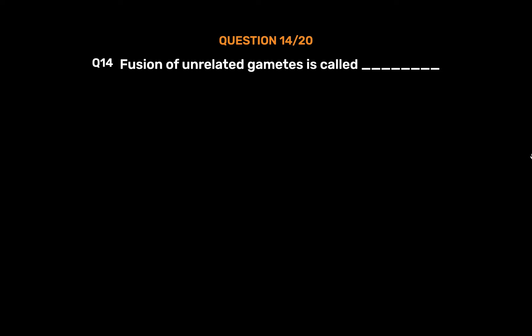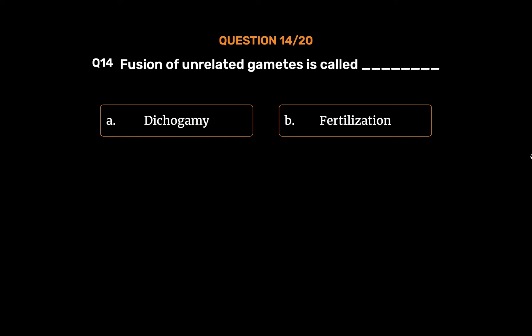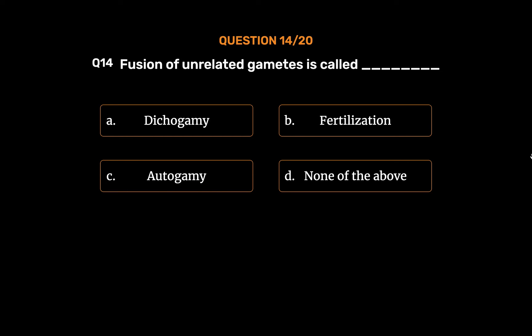Question No. 14: Fusion of unrelated gametes is called. Option A: Dichogamy. Option B: Fertilization. Option C: Autogamy. Option D: None of the above. The correct answer is Option B: Fertilization.